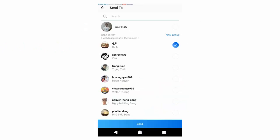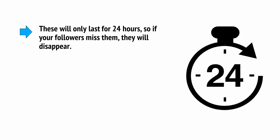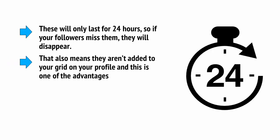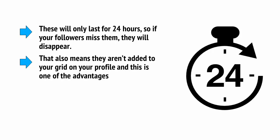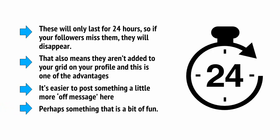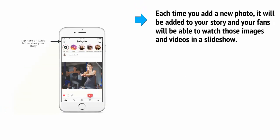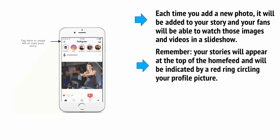Note that your stories will work a little differently to your regular pictures. These will only last for 24 hours, so if your followers miss them, they will disappear. That also means they aren't added to your grid on your profile, and this is one of the advantages — it's easier to post something a little more off-message here, perhaps something that is a bit of fun. Each time you add a new photo, it will be added to your story and your fans will be able to watch those images and videos in a slideshow. Your stories will appear at the top of the home feed and will be indicated by a red ring circling your profile picture.